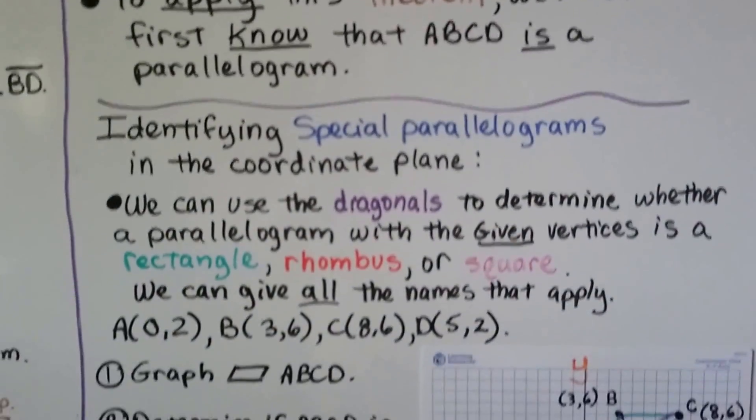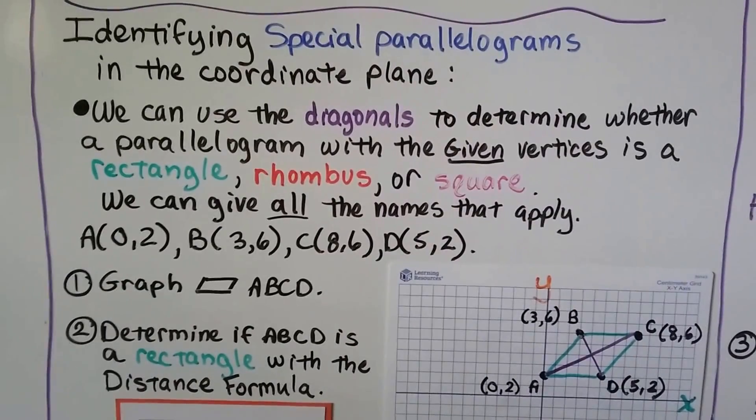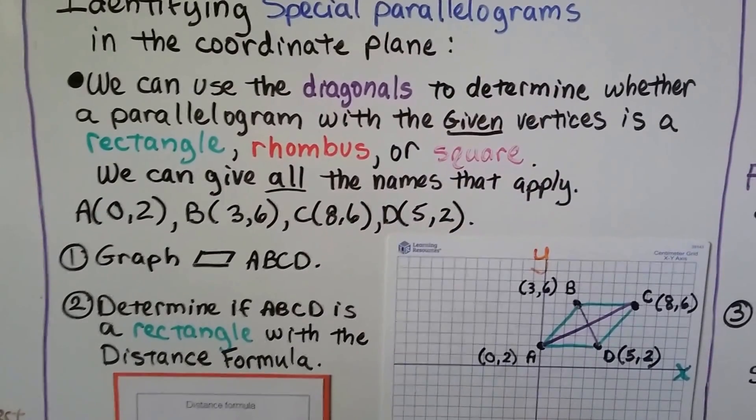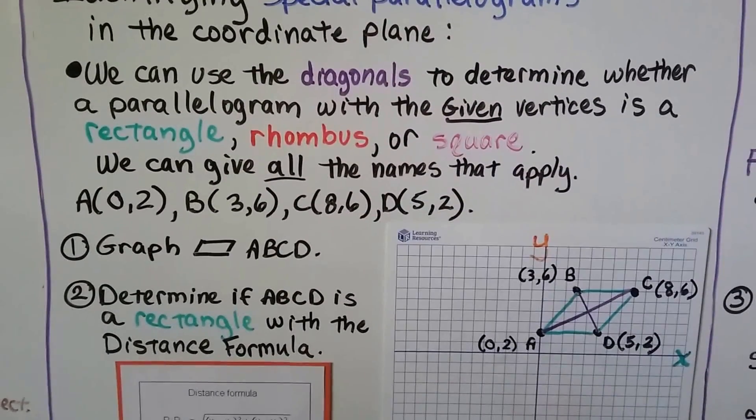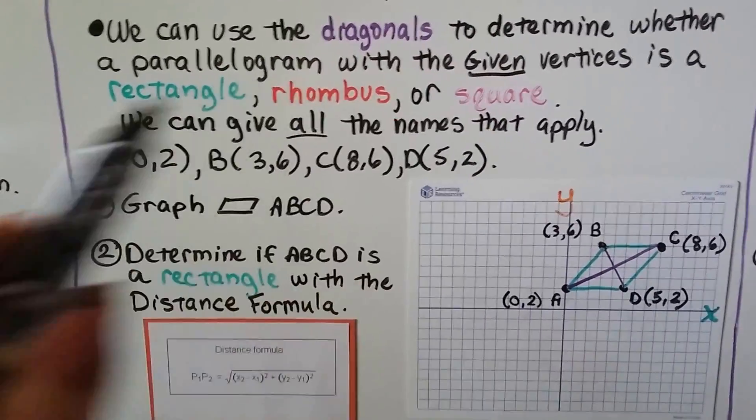Now, identifying special parallelograms in the coordinate plane. We can use the diagonals to determine whether a parallelogram with the given vertices is a rectangle, rhombus, or square. We can give all the names that apply.